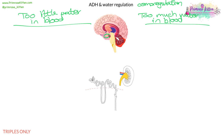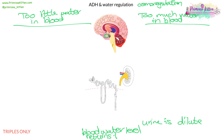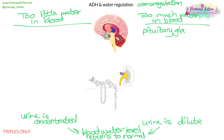If there's too much water in the blood, the body needs to release a lot of water, which means the urine will end up being dilute and the blood water level returns to normal. If there's too little water in the blood, the body tries to keep water, so the urine is concentrated, and the blood water level returns to normal. The pituitary gland detects these changes and releases ADH accordingly.